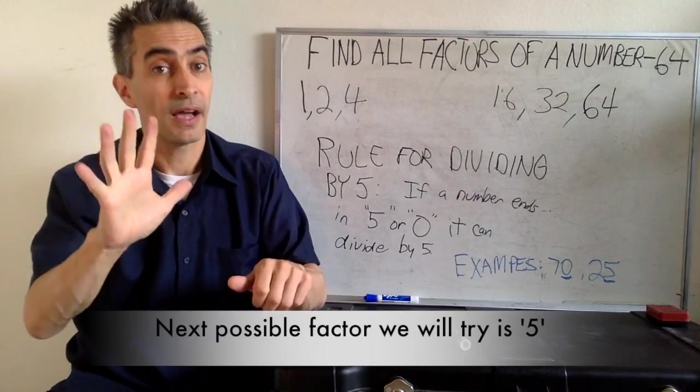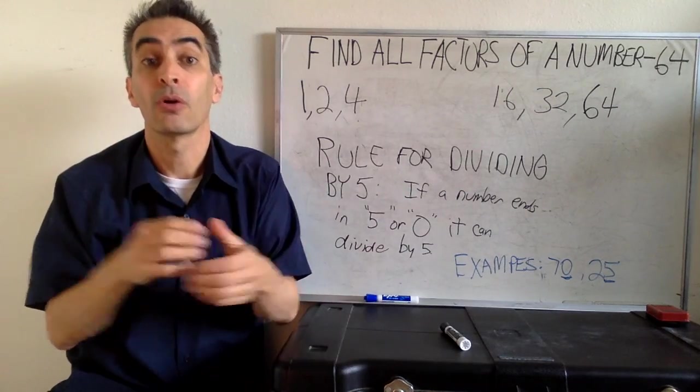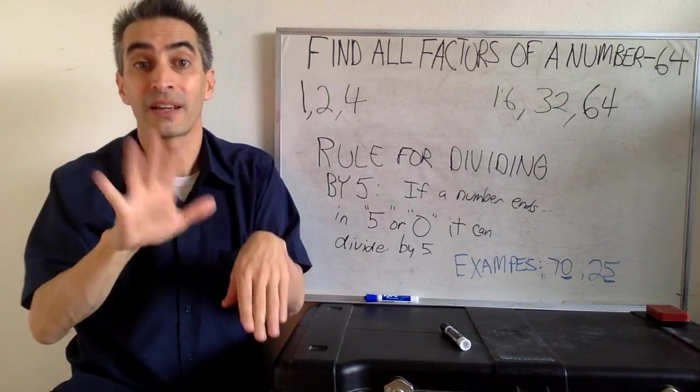All the other factors are found between 4 and 16. Next, we're going to try 5. How many times does 5 go into 64? We can use the rule for dividing by 5.